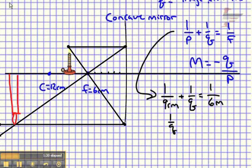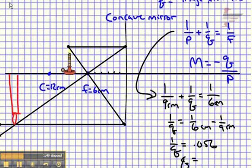So 1 over Q is equal to 1 over 6 minus 1 over 9 centimeters, so 1 over Q is equal to 0.056, or Q, when you invert that, is going to be approximately equal to 18 centimeters.